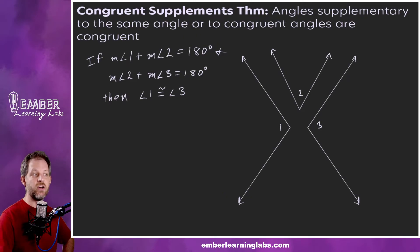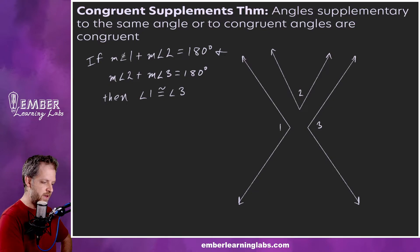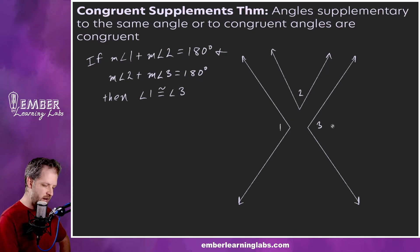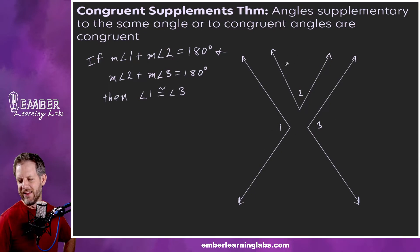The next theorem is the congruent supplements theorem. It says angles supplementary to the same angle or to congruent angles are congruent. So if the measure of angle one plus the measure of angle two equals 180 — they're supplementary — and the measure of angle two plus the measure of angle three equals 180 — they're supplementary — then angle one and angle three are congruent. That's the congruent supplements theorem.